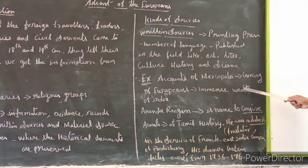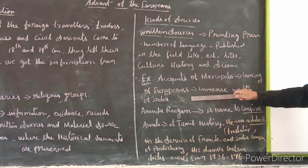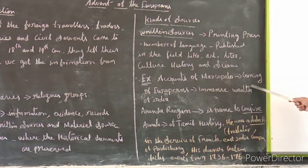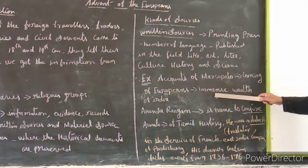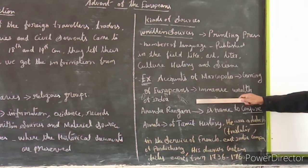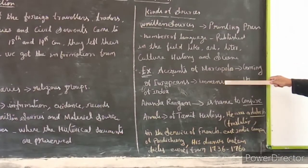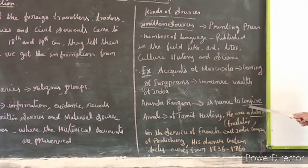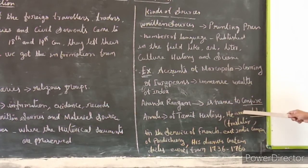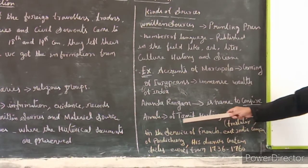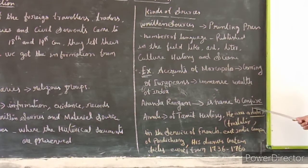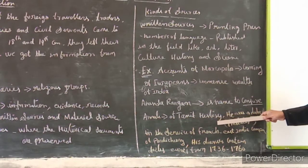An example of written sources is the accounts of Marco Polo. Marco Polo gave accounts of coming to another country because of the great wealth of India. That is one important example of written sources. Another important written source is the Ananda Ranga Pillai diary. Ananda Ranga is the name of the Pillai, who was known as the chief interpreter.